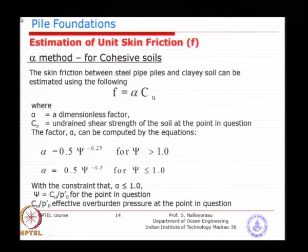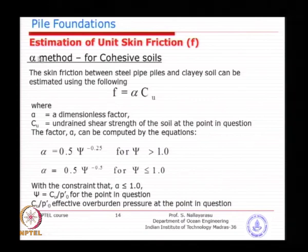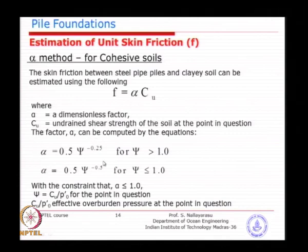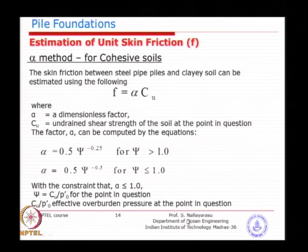For cohesive soils, the strength is given in terms of undrained shear strength Cu, and a fraction of that is taken as the frictional resistance between the pile and the soil. Alpha is a dimensionless parameter that needs to be calculated depending on the type of soil and location. An empirical formula gives alpha proportional to the overburden pressure. The psi value is Cu divided by P-naught, where P-naught is the overburden pressure — essentially height times effective unit weight, which increases with depth.